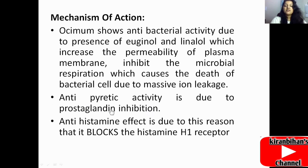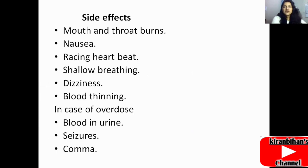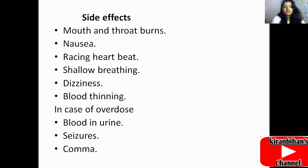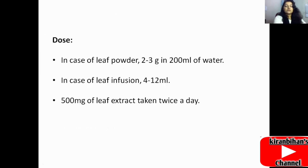The antipyretic — fever lowering — activity is due to prostaglandin inhibition. The antihistamine effect is due to blocking of the histamine H1 receptor. The side effects of Ocimum basilicum include mouth and throat burns, nausea, racing heartbeat, and shallow breathing. In cases of overdose: dizziness, blood thinning, blood in urine, seizures, and coma.